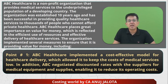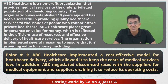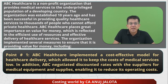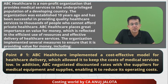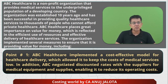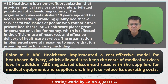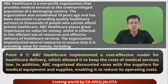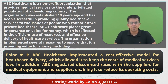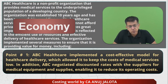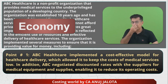Point number one: ABC Healthcare implemented a cost-effective model for healthcare delivery which allowed it to keep the cost of medical services low. In addition, ABC negotiated discounts with suppliers for medical equipment and supplies, enabling it to reduce its operating cost. This point should come under economy — they mention a cost-effective model keeping costs low, and they negotiate with suppliers for medicines and medical equipment. So point number one goes under economy.